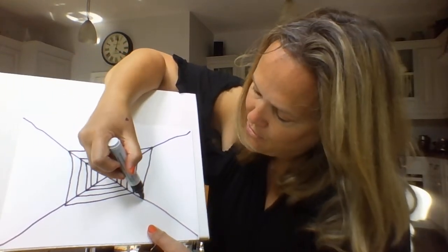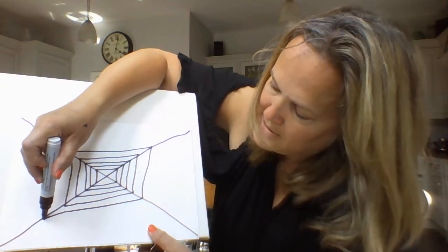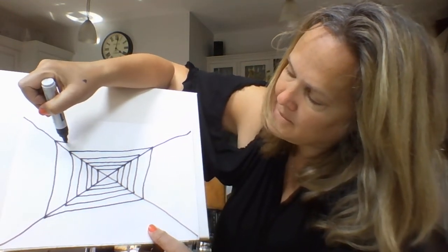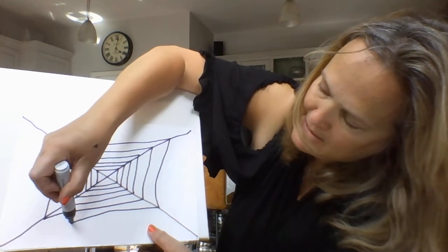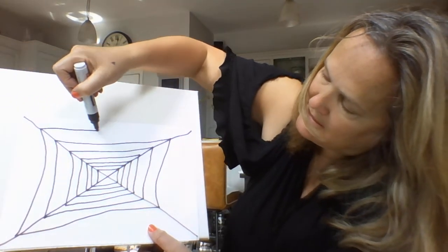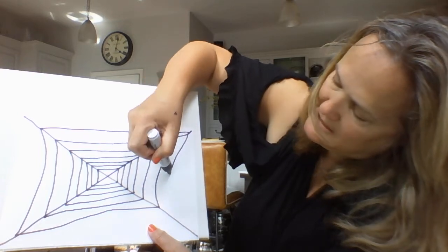Can you see it's taking shape? You can make them a little bit wider. On a real spider's web, the web starts to spread out a bit as it gets bigger. So I'm making my lines a bit further apart. There we go, almost there.